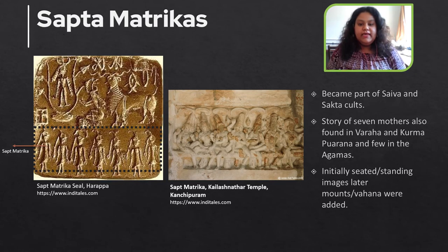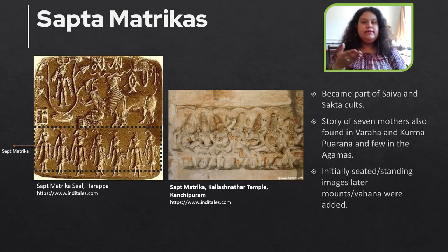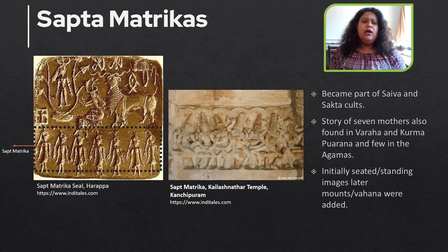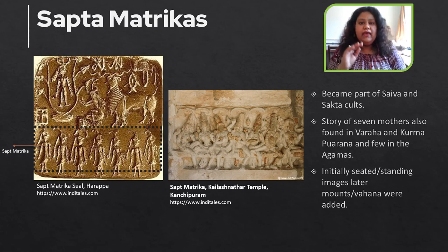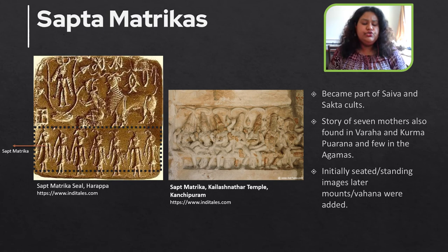The next group is that of the Saptamathrikas or the Seven Mothers. The Saptamathrikas have been prevalent since the Indus Valley civilization. Whether it was actually the Saptamathrika is not certain, but from a seal one can make out that there are seven mothers standing before some sacrificial ritual. From this it is traced that the Saptamathrika tradition must have followed from such an ancient age.